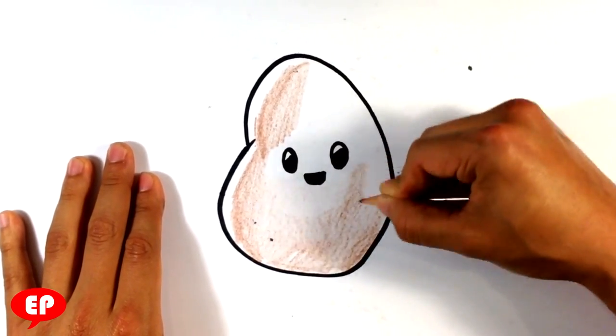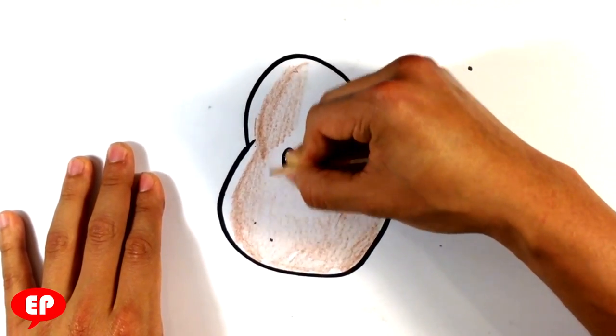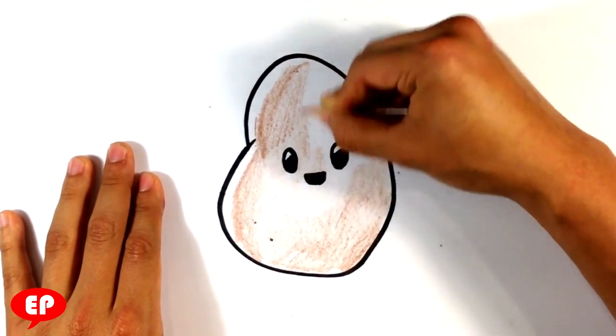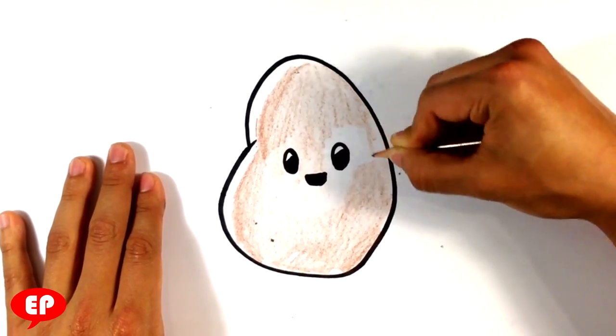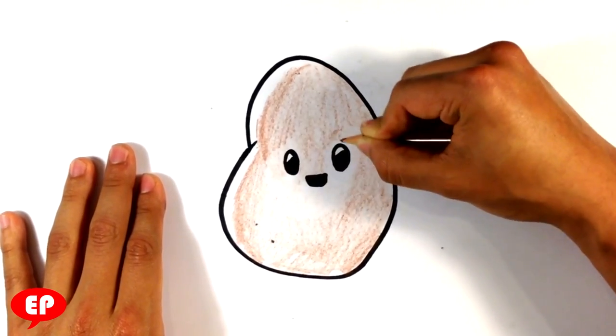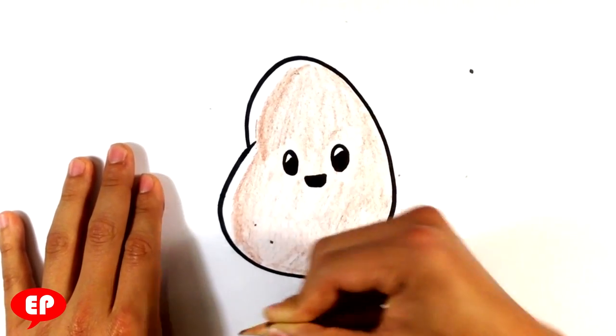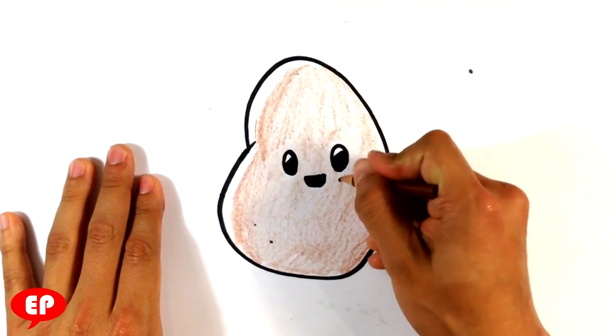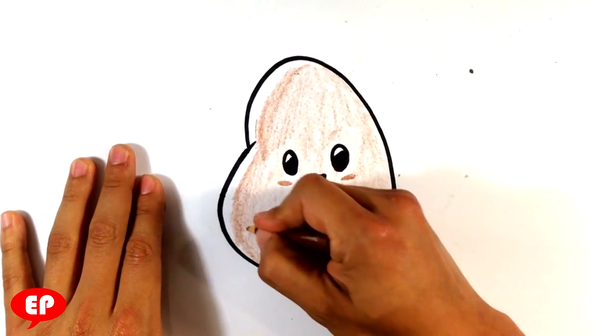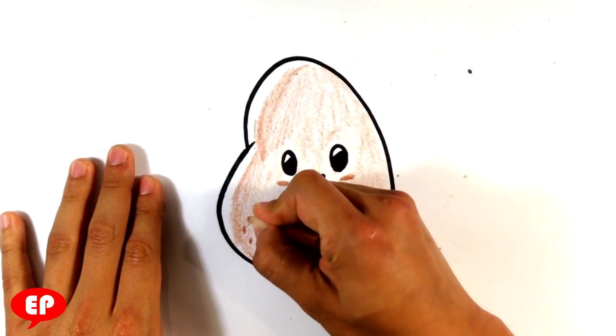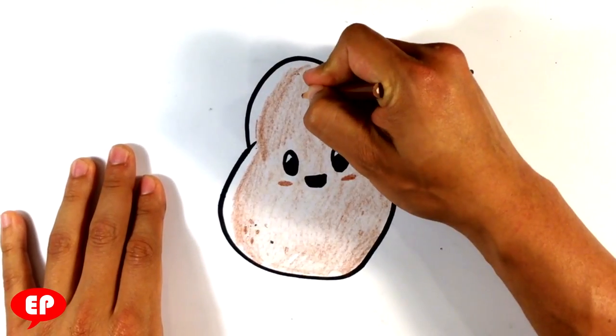The only thing I'm going to be careful not to go over would be the highlights and the eyes. That's something I'm taking very specific care not to go over. And here. Maybe give it some rosy cheeks. And you can put some dots here on the potato. Make it look like a real potato.